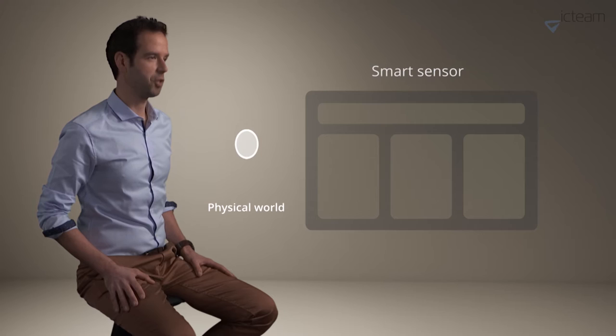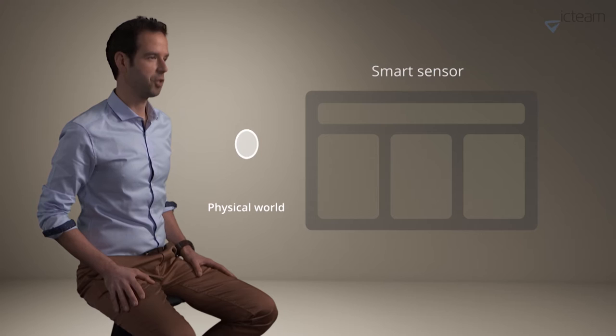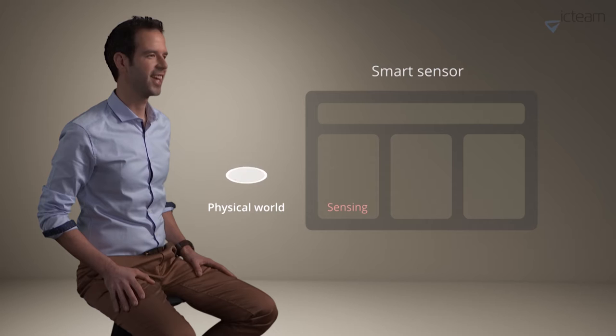A smart sensor is a compact electronic system that collects information from the physical world. It is built with a few integrated circuits. First, sensing is performed by imagers, accelerometers, or biosensors.